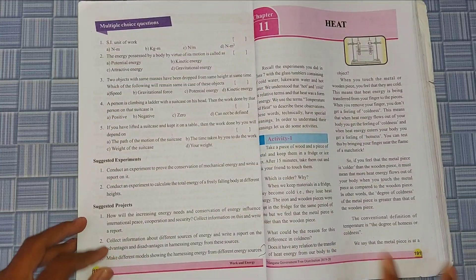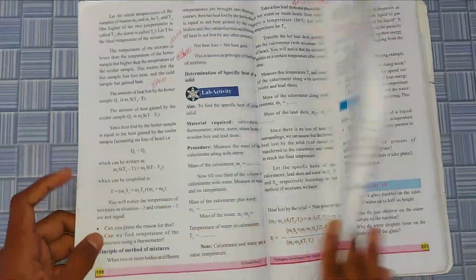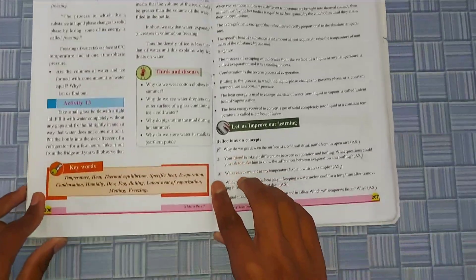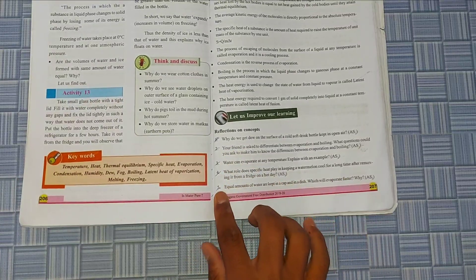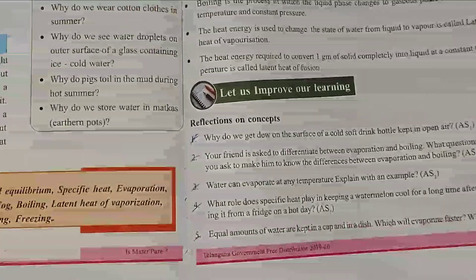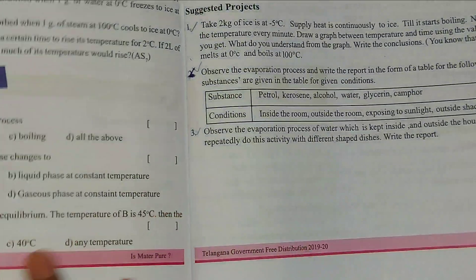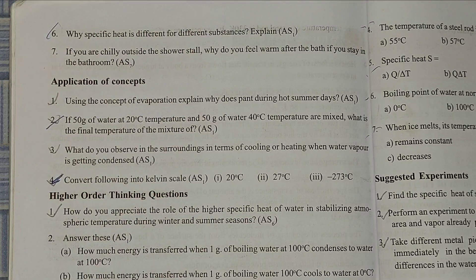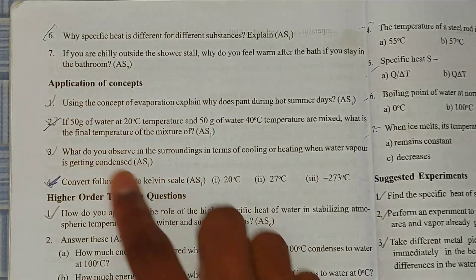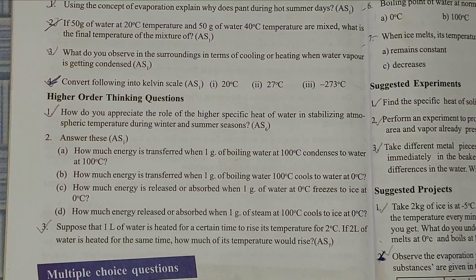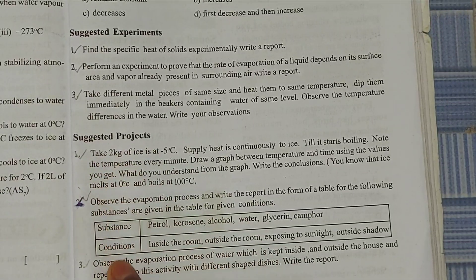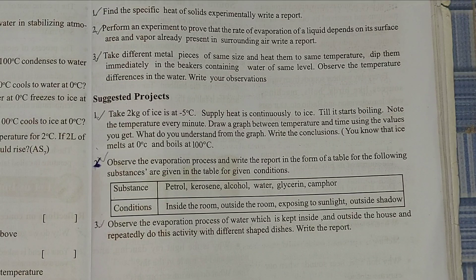Today I am going to show you all question answers. In the textbook you can see Reflection of Concept — total seven questions. Application of Concepts has four questions, Higher Order Thinking has three questions, Suggested Experiment has three questions, and Suggested Project also has three questions. Today I am going to show all these question answers.